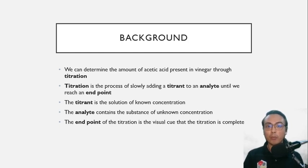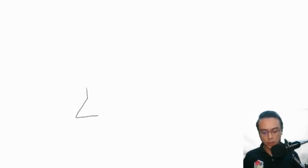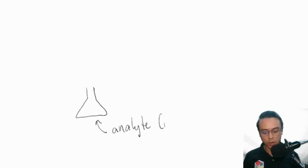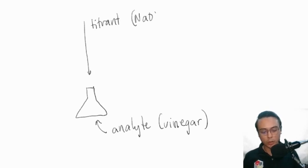We don't yet know the percentage by mass of acetic acid in our vinegar, which is why the vinegar is our analyte. The endpoint of the titration is the visual cue that the titration is complete. In this experiment you have a titration setup where your analyte — our vinegar sample — is contained in a flask, and we will be slowly adding our titrant, which in this case is a sodium hydroxide solution.